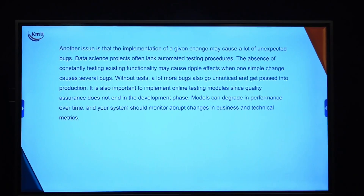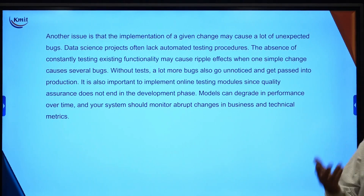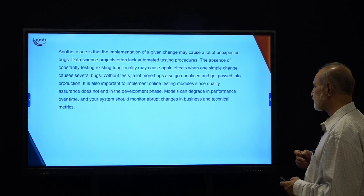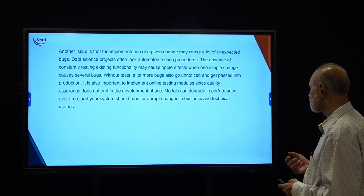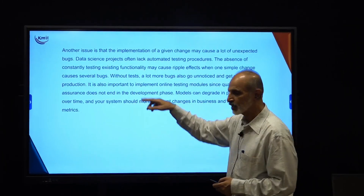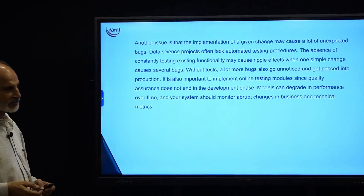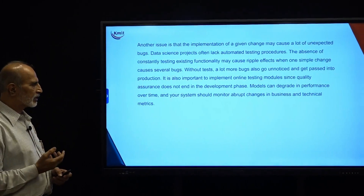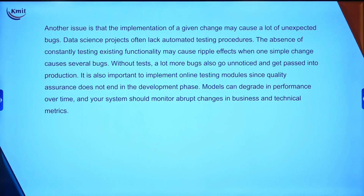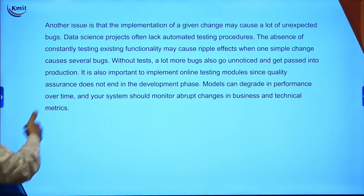Another issue is that implementation of a given machine learning model may cause unexpected bugs. DS projects often lack automated testing procedures or investment. The absence of constantly testing existing functionality may cause a ripple effect where one simple change causes several bugs. Even if you change one piece of code, it may cause bugs in other parts. Without tests, many bugs go unnoticed and get passed into the production system — this is risk aversion in action.